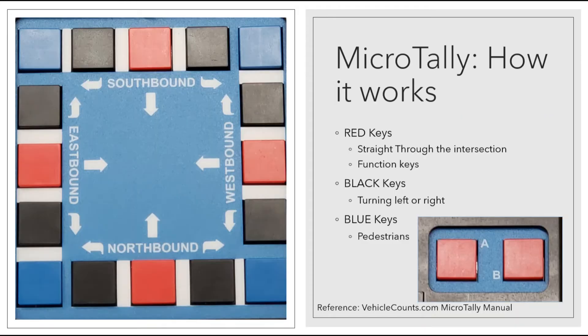How do you use the Micro Tally? There is a slide switch labeled Run and Stop at the top of the Micro Tally. This switch controls when the Micro Tally is recording key presses. When the switch is in the run position, any press of any of the tally buttons will be recorded. The Micro Tally generates a beep on each key press, letting you know that the key is being recorded. The beeps have different tones depending on the key location.